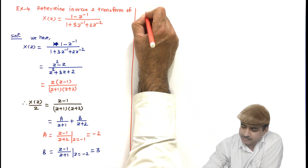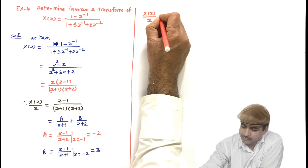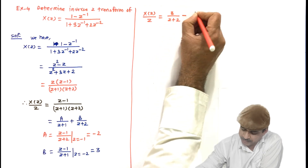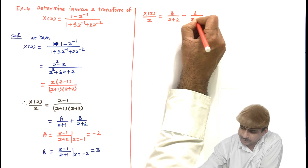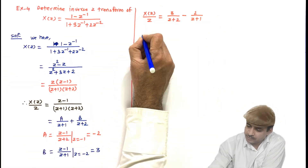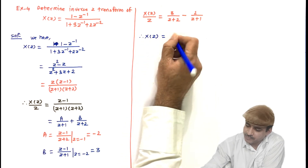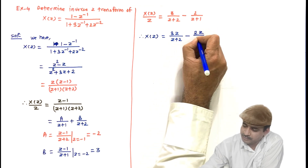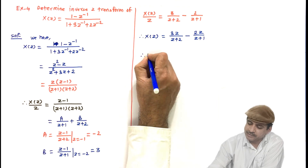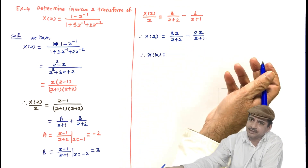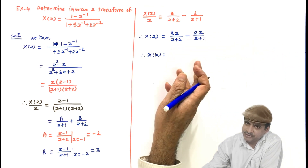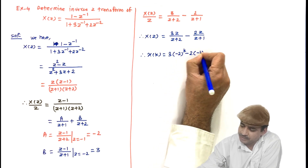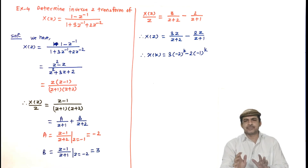So X of Z by Z equals 3/(Z+2) minus 2/(Z+1), and therefore X of Z equals 3Z/(Z+2) minus 2Z/(Z+1). Using the pair A raised to K with Z-transform Z/(Z minus A), we get X of K equals 3 times (−2) raised to K minus 2 times (−1) raised to K.